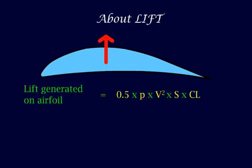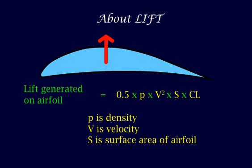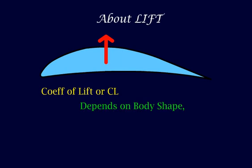The lift can be calculated using this formula, where rho is the density, v is the velocity, s is the surface area and cl is the coefficient of lift. The coefficient of lift depends on the body's shape, the angle of attack and the air properties such as viscosity.